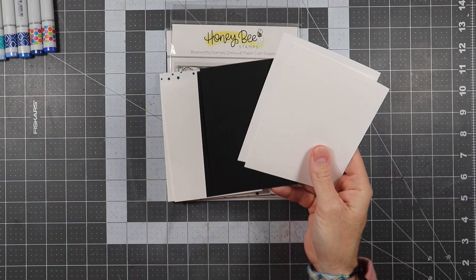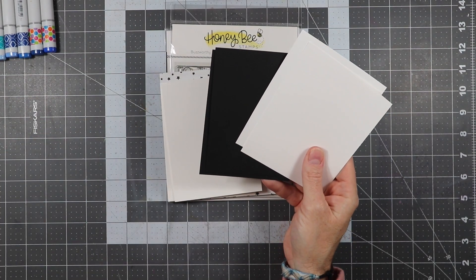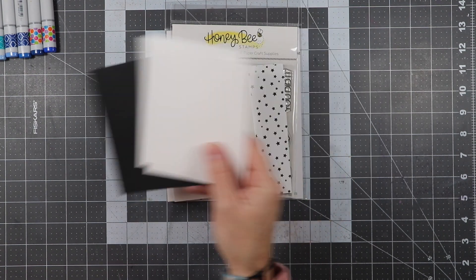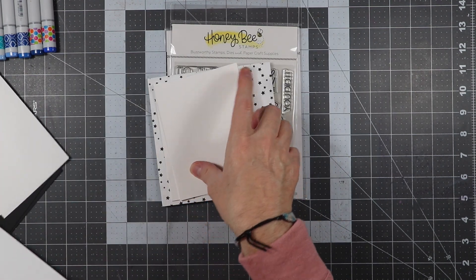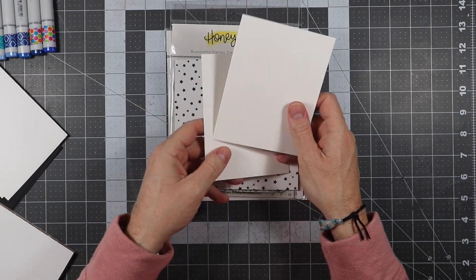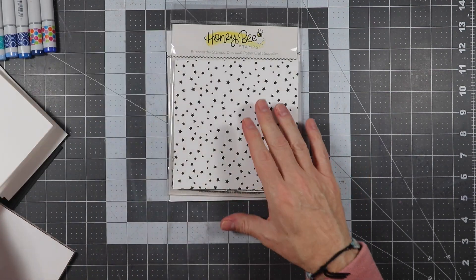We're going to be using some black and white cardstock here. These are just 80-pound Neenah Solar White and then some black cardstock from my stash. We're also going to be using some white here for card bases.